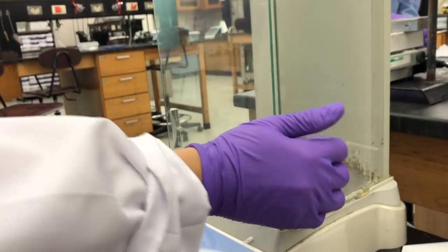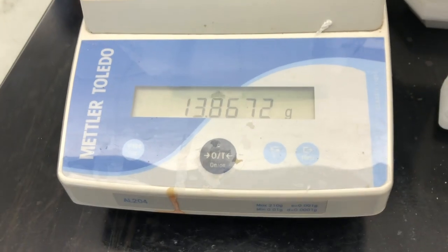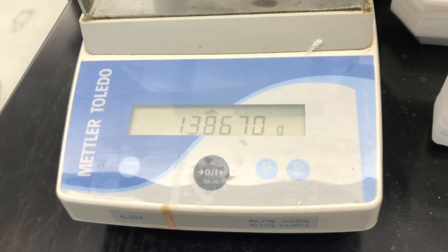Re-weigh the vial that now contains your product. Use this data to calculate the yield. My partner and I obtained approximately 0.7566 grams.